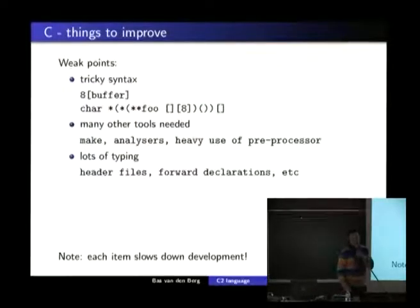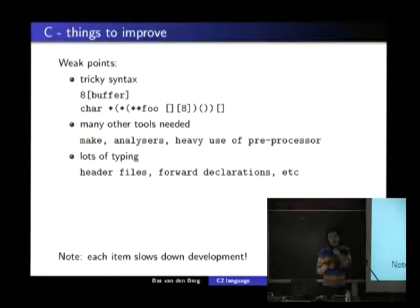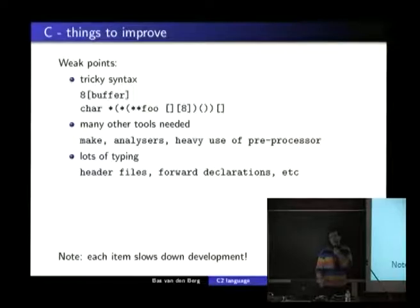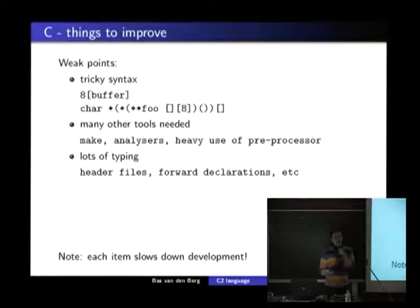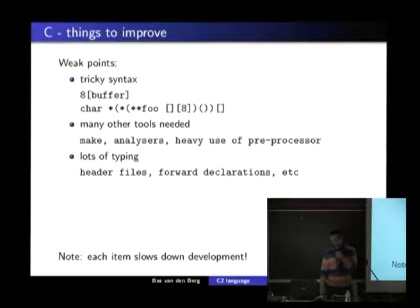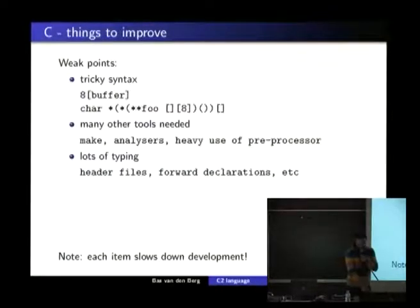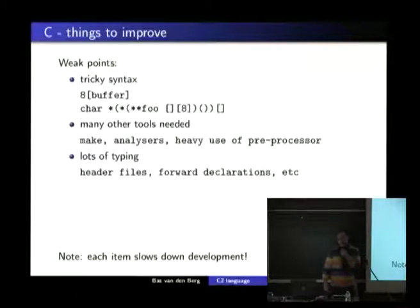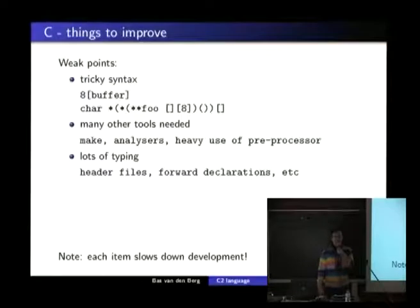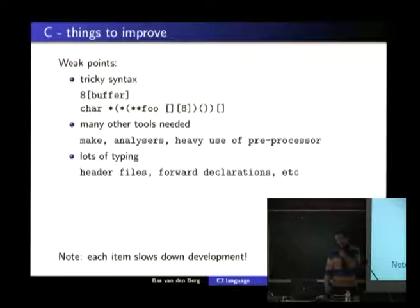One other thing that bothered me is that you always need a lot of tools to just build a C program. A normal C project has multiple C files, so you need something like a makefile to build it — not just a compiler. And the preprocessor in the compiler is heavily used, or abused. The thing I found most bothersome was that I had to type a lot: forward declarations and header files, while languages like Java don't have that. So why can't we make a C compiler that just understands that?